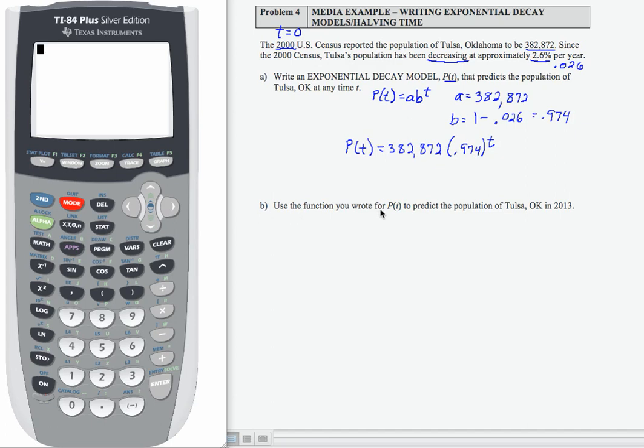Use the function you wrote for P(t) to predict the population of Tulsa, Oklahoma in 2013. For 2013, our t value will be 2013 minus 2000, which equals 13 years. We're going to evaluate our population decay function at an input of 13.